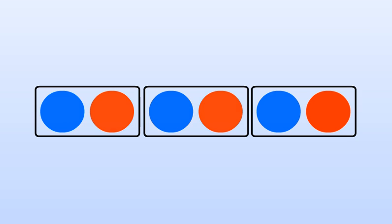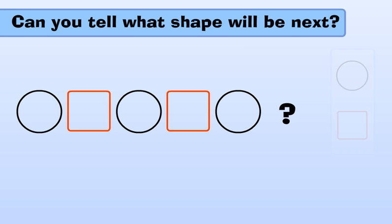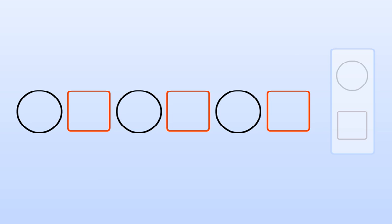We will see another example. Circle, square, circle, square, circle. Can you tell what shape will be next? Oh yes, it's square.